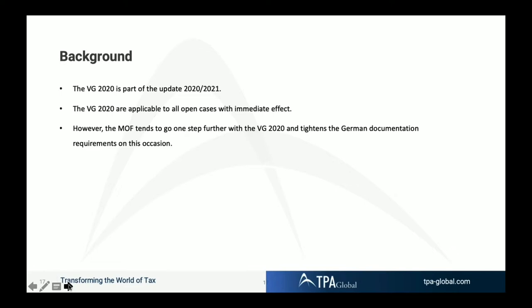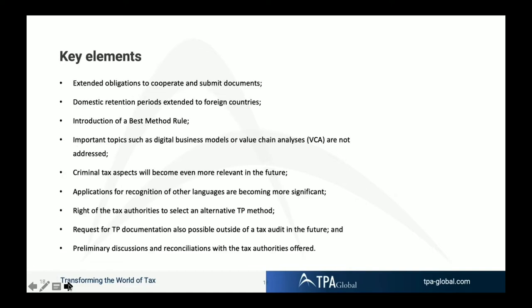By this occasion, the Ministry of Finance went one step further and tightened the German documentation requirements — through the back door, so to speak. The key elements of the 2020 guidelines include extended obligations to cooperate and submit documents. There is a detailed description of how to cooperate and what documents must be submitted, including emails and analysis from your advisors — a detailed catalogue of what you have to provide.